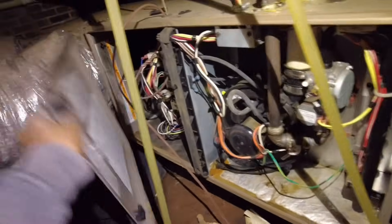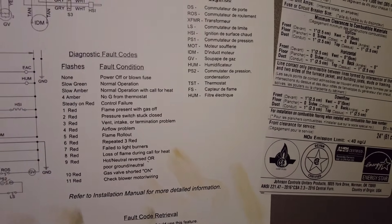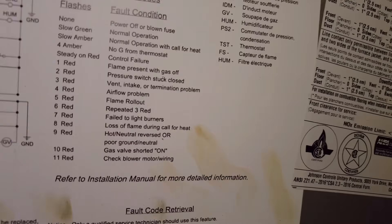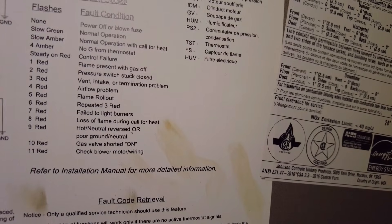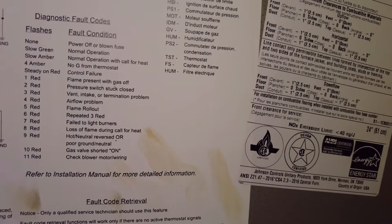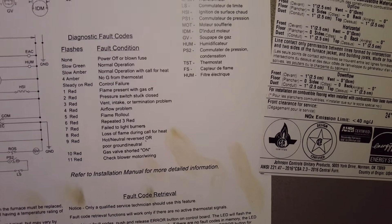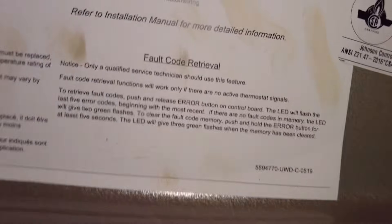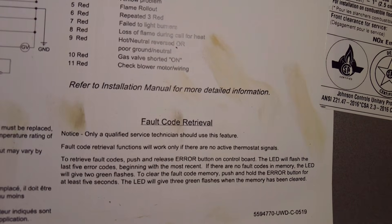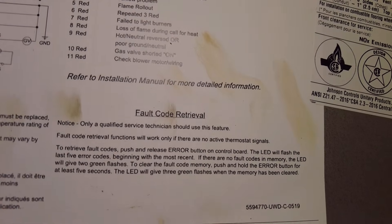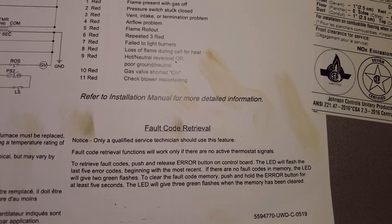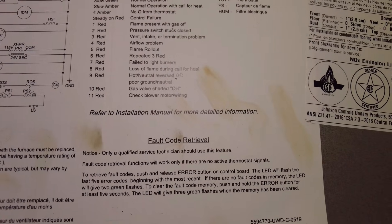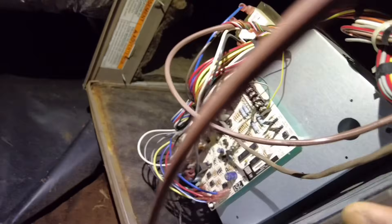Six flashes — so six flashes repeated three times means a vent intake termination problem. I'm guessing that means we've had a vent intake termination problem three times. For fault code retrieval it says: will only work if there is no active thermostat signal. To achieve fault codes, push and release the error button on the control board — it'll flash. So push and release the error button on the board.